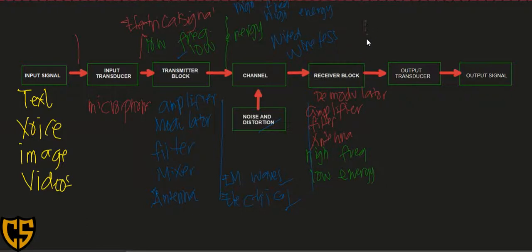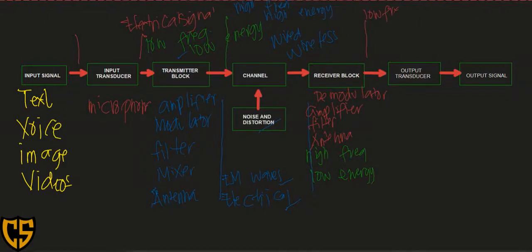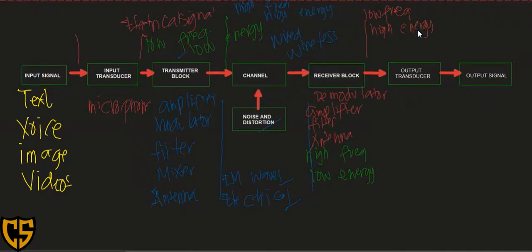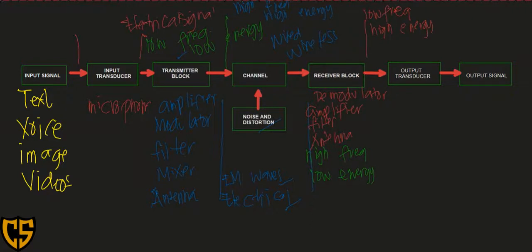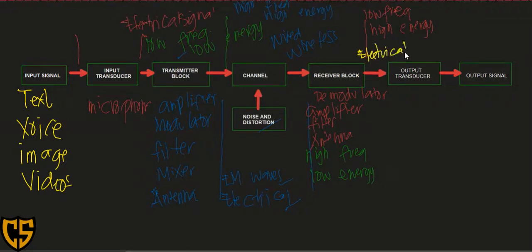After passing through the receiver block, the property of the output signal will be low frequency — because of the demodulator — and high energy. Before entering the receiver block, the signal could be electromagnetic waves or electrical waves; after exiting the receiver block, the signal will be purely electrical.